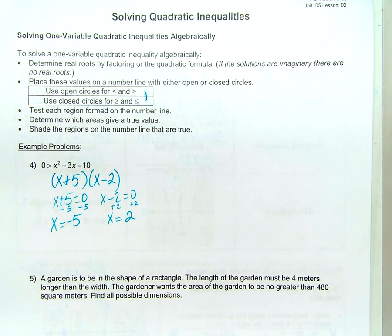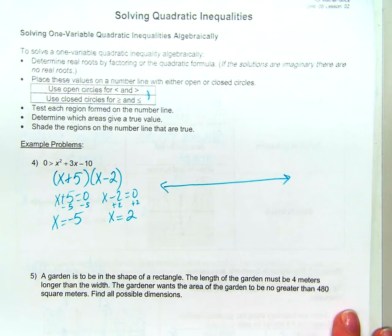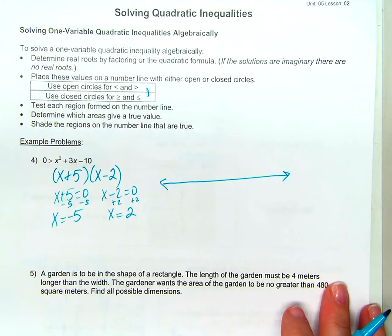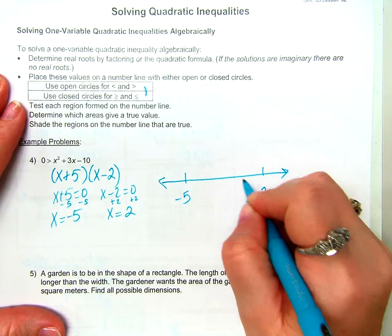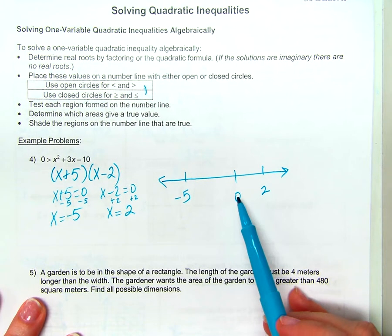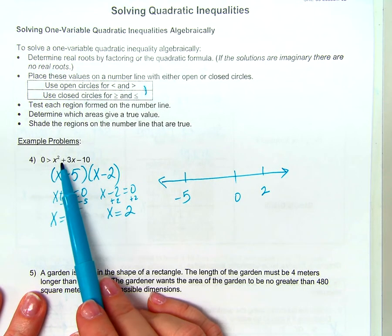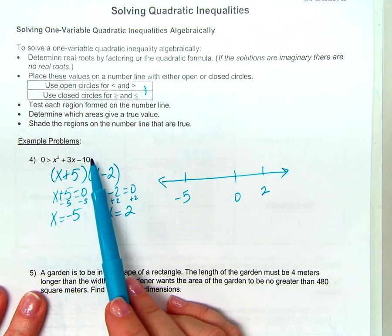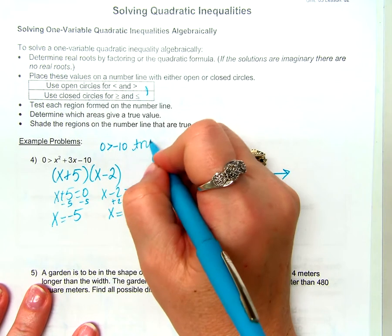Now we have to show all of the answers on a number line. I want both of my roots on there, and I also want zero on there, because once again, if I have to choose a test point, I'd want to use zero. Look at the sign in the original problem — it's a greater than sign — so we're going to use open circles for less than and greater than. So on my two roots on the number line, I need open circles. Then I choose zero as a test point and substitute it back. Zero squared is zero, plus three times zero is still zero, minus ten is negative ten. So 0 > −10. That is true.